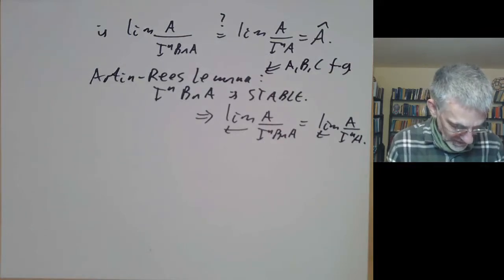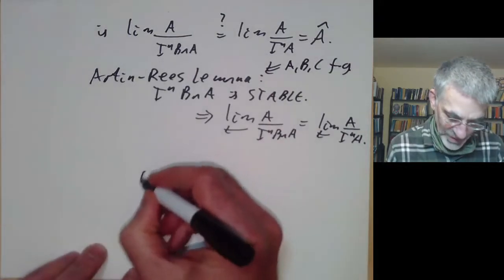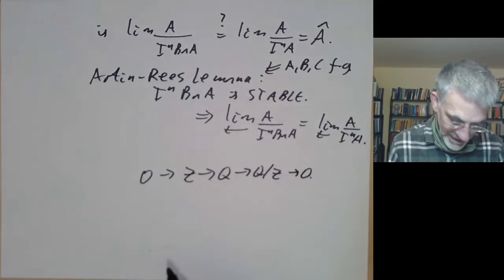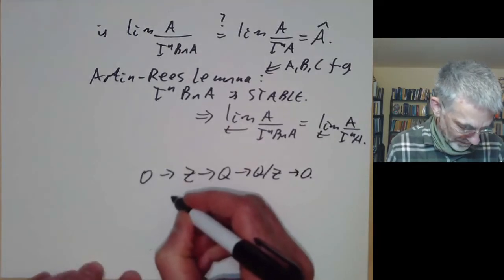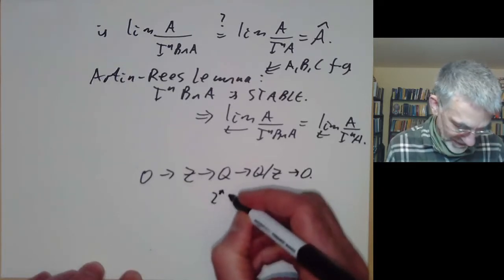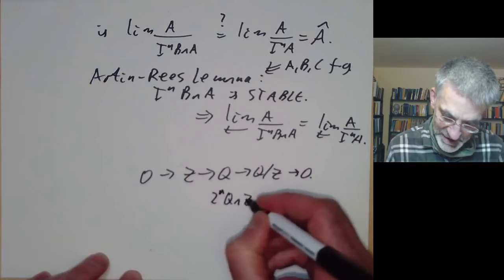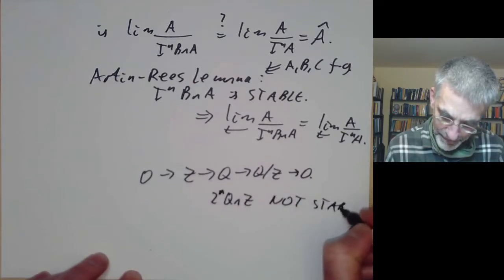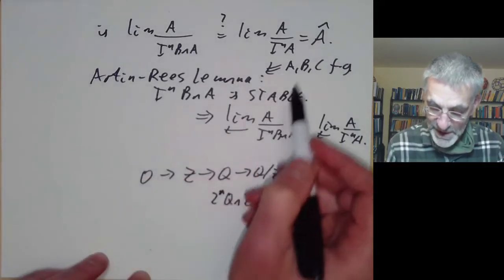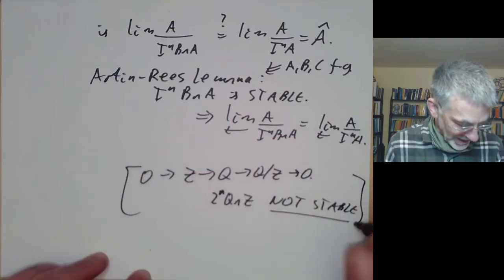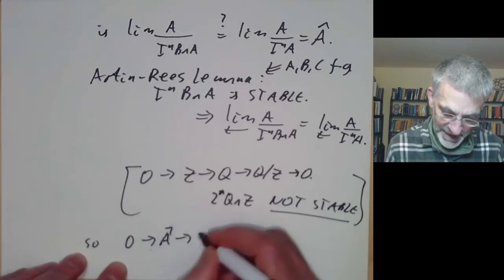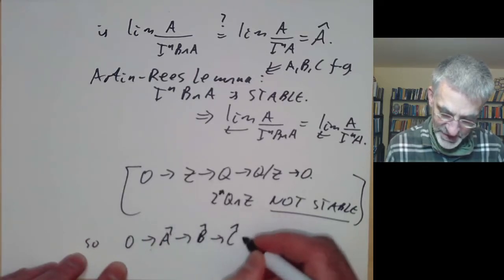The Artin-Rees lemma requires A, B, and C to be finitely generated modules and fails in general. For example, in 0 → Z → Q → Q/Z → 0, the sequence 2^n Q ∩ Z is not stable. So stability really does require finite generation. The conclusion is that 0 → Â → B̂ → Ĉ → 0 is exact.